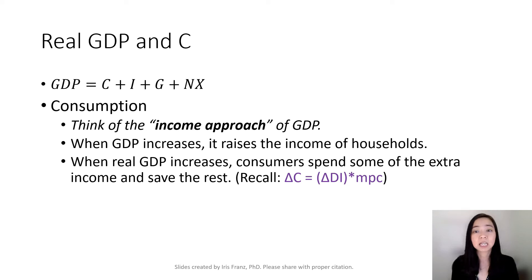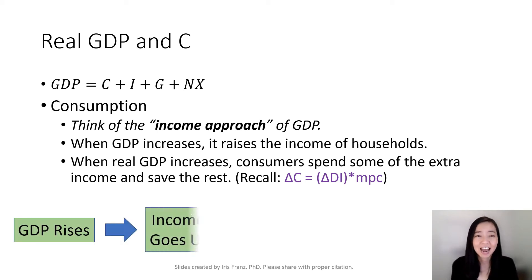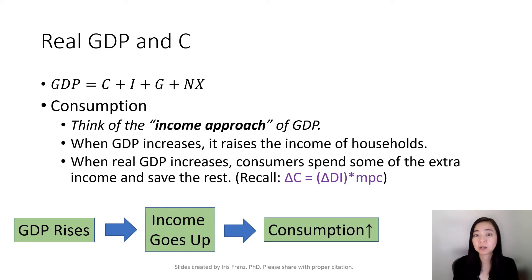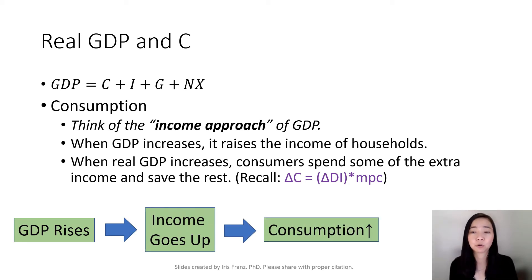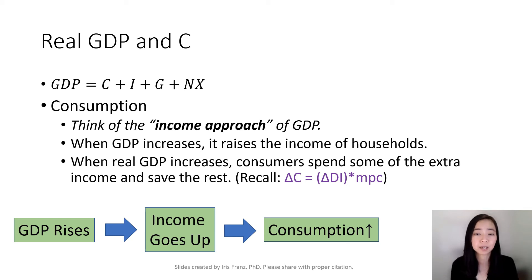Using the income approach of GDP, we know that when GDP goes up, it also means that the income of households have been raised. And therefore, if your GDP increases, that means our consumption is also going to be increased. Remember, change in consumption is equal to change in disposable income times MPC.